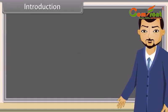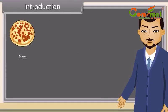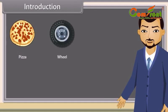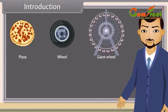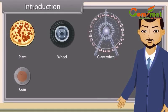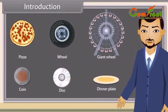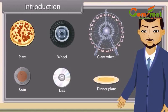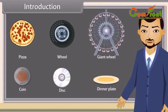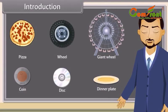Look at these things: Pizza, Wheel, Giant Wheel, Coin, Disc, Dinner Plate. All these are examples of a circle.